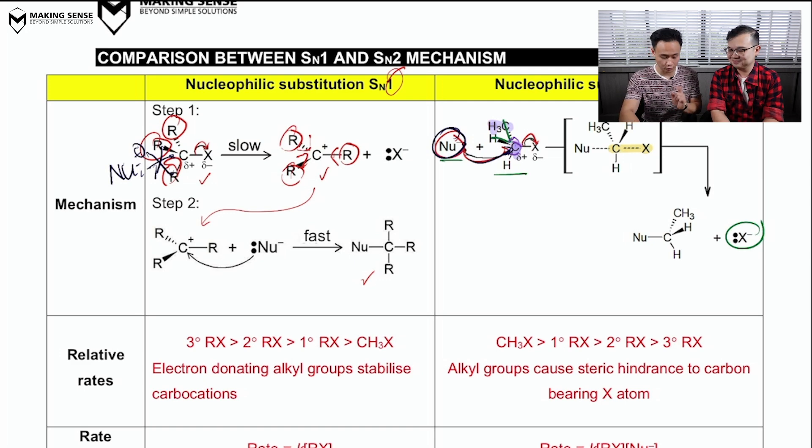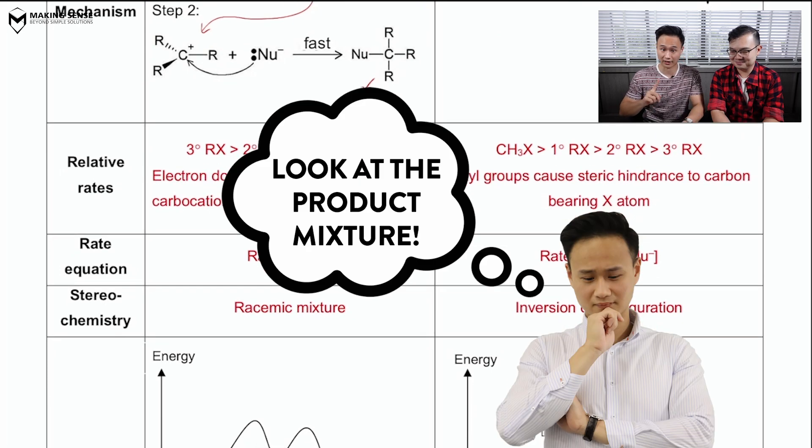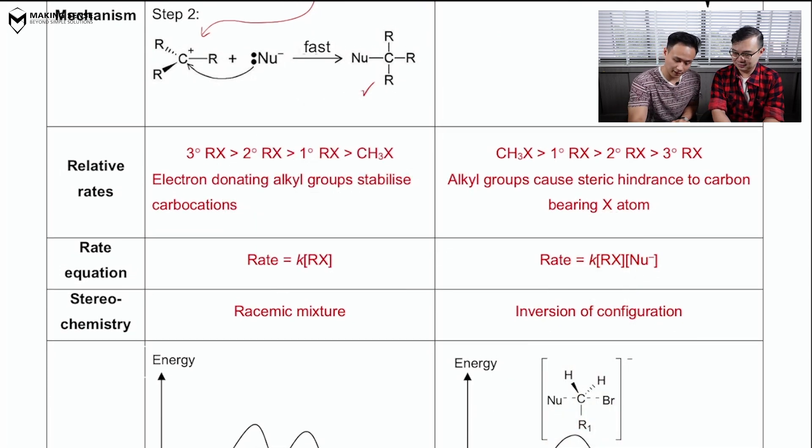So to really know, we need to do an experiment and we have to look at the product mixture. Now, if the product mixture is racemic, then we know it's SN1. Now, if the product mixture has an inversion of configuration though, then we know it's SN2. Okay.